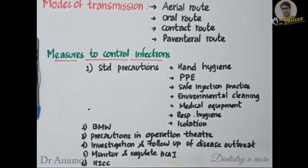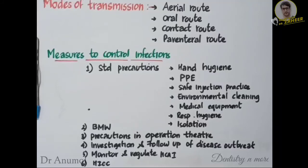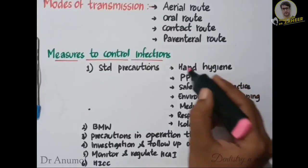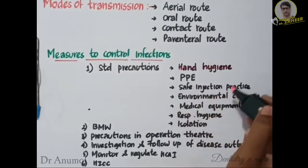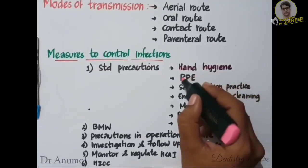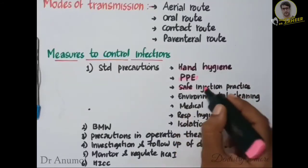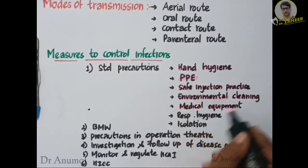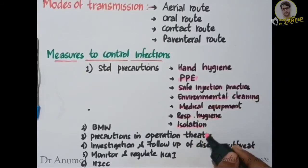Finally, the measures to control these infections. The first is standard precautions — the minimum or basic infection prevention practices applied regardless of the suspected or confirmed infection status of the patient. Standard precautions include hand hygiene and proper hand washing, proper use of gloves, masks, and personal protective equipment, safe injection practices, proper handling of sharps, environmental cleaning, medical equipment care, respiratory hygiene, and proper isolation of the patient.